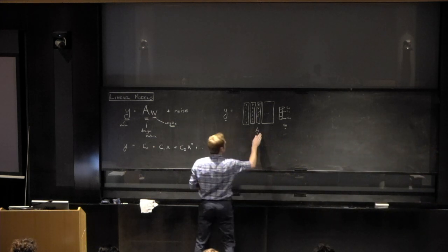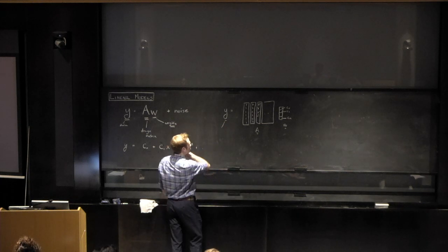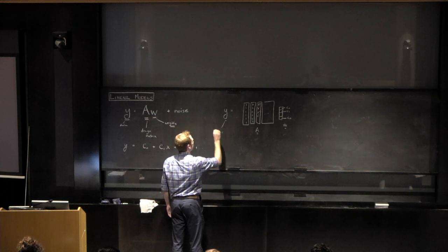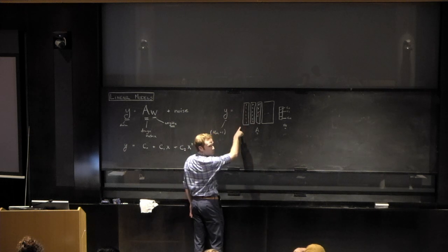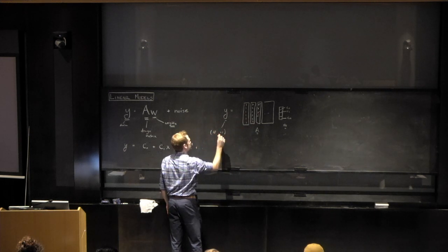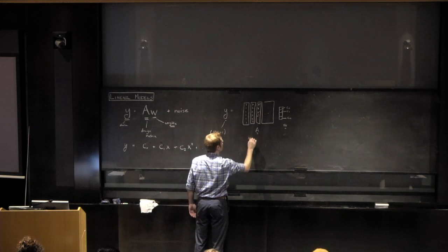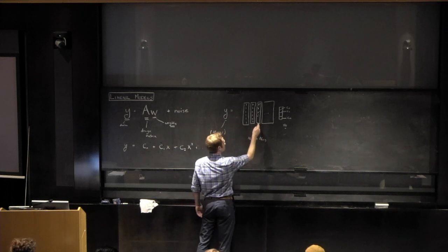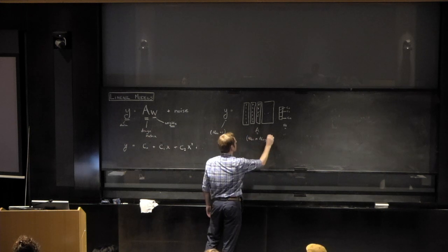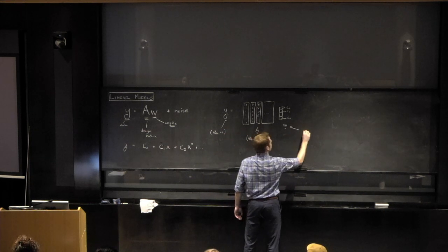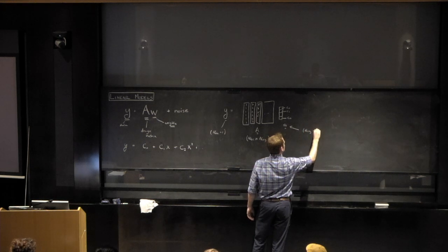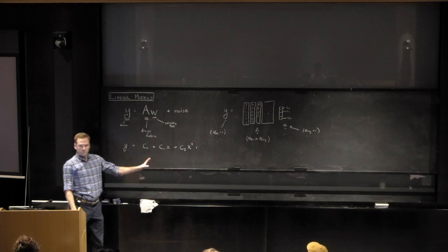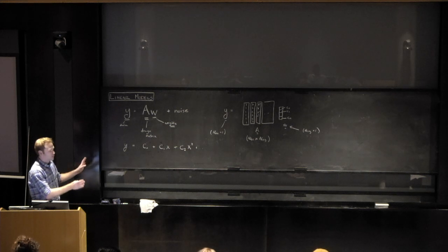The dimensions of the data vector are (number of points) by one. The design matrix is (number of observations) by (number of regressors) — each column is something you're regressing against. The weight vector is (number of regressors) by one. There's nothing profound here, but are there any questions about this setup?